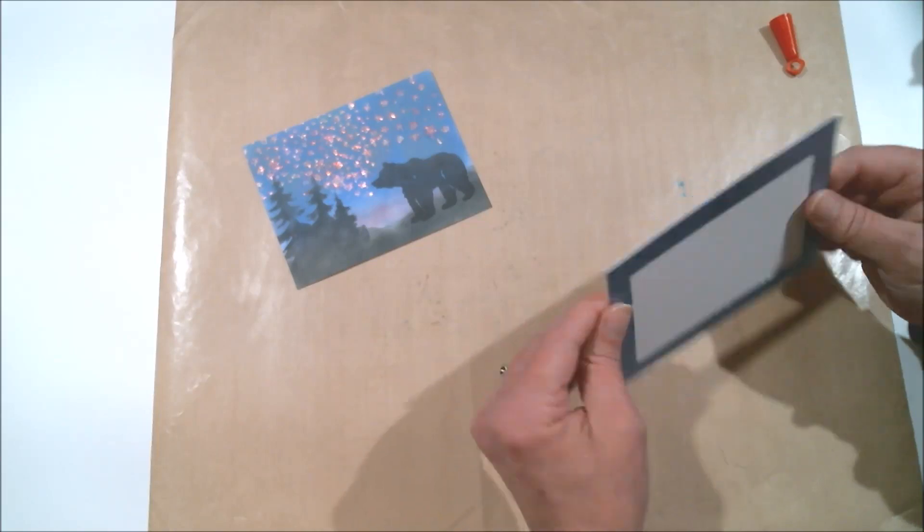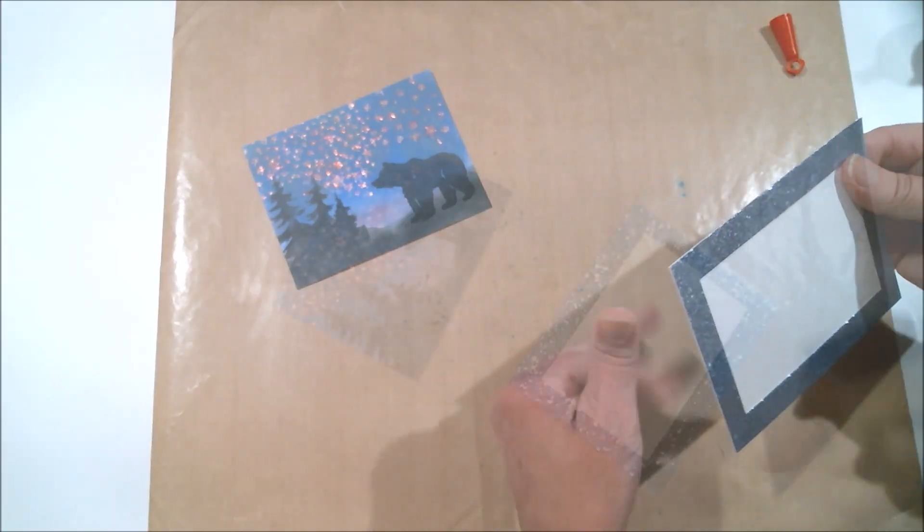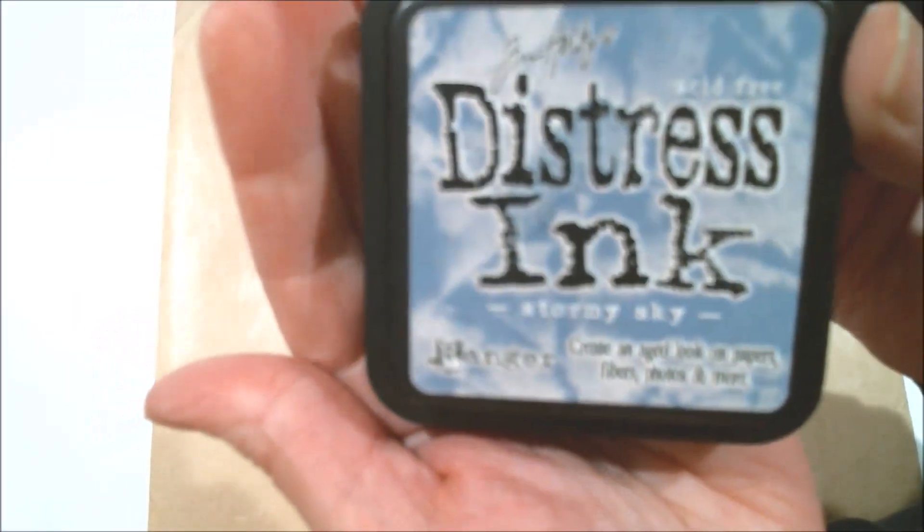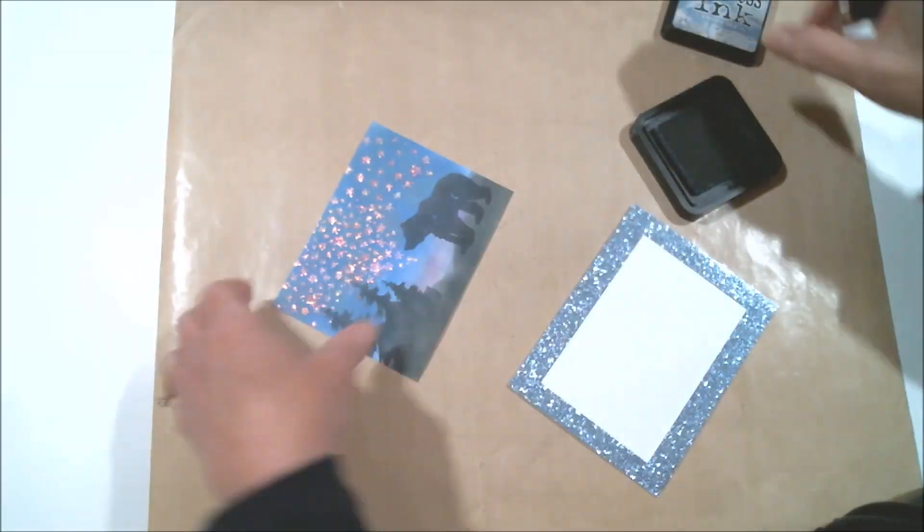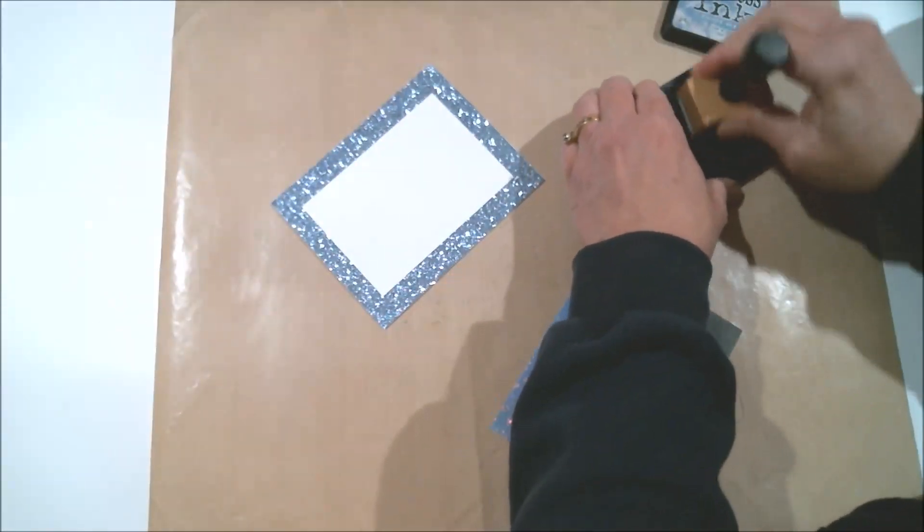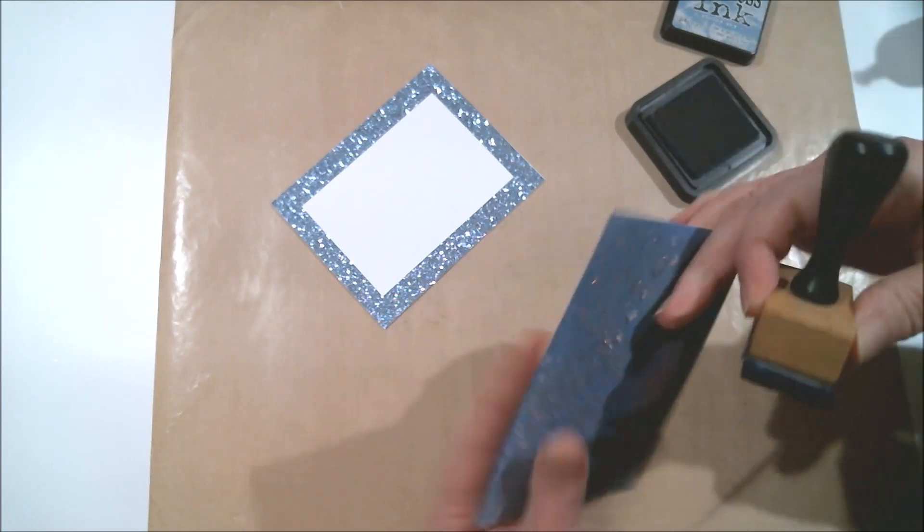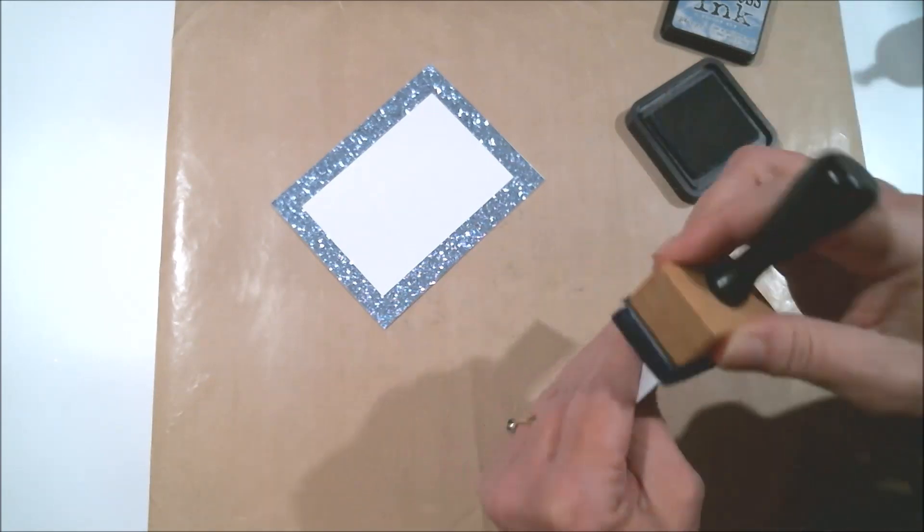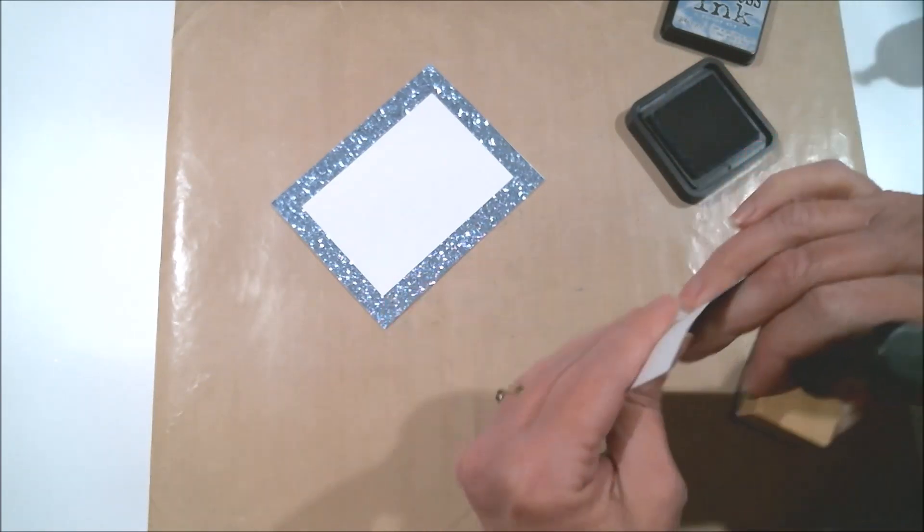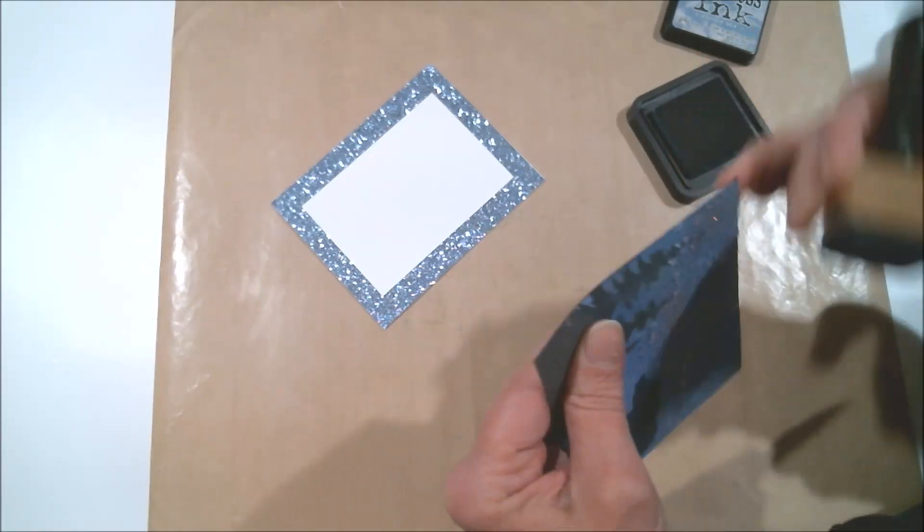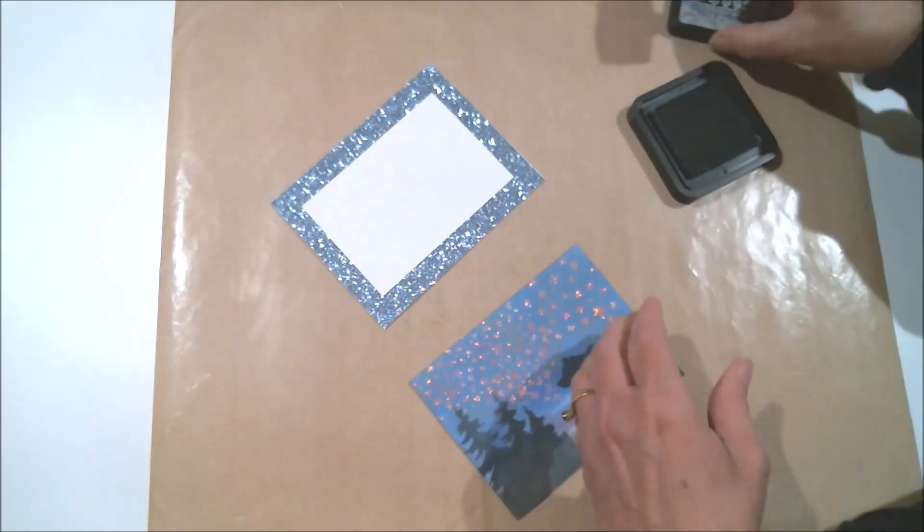Next I'm going to be using some Distress ink to ink the edges because I do not like the white edges that are around the edges like that. I mean, I've made the front of it all blue but the white cardstock is still showing on the edges, so that kind of gives it a nice clean finished look.